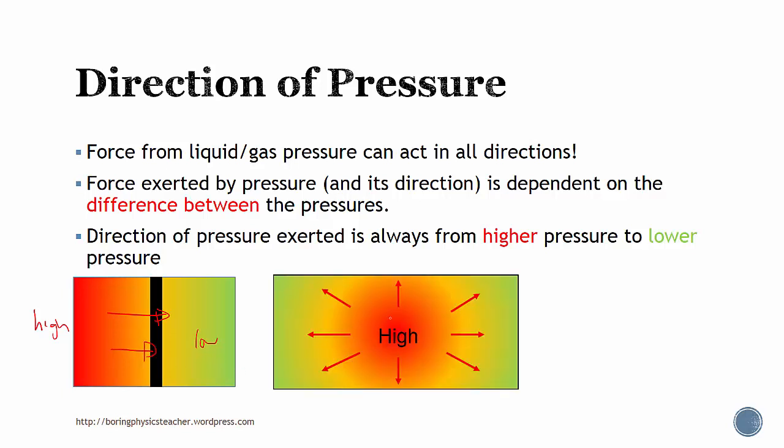If the center is a high pressure region and the surrounding is low pressure, the pressure will exit upwards in all directions, not just down. Or the opposite, if the surrounding is high pressure and the center is low pressure, the pressure will be acting inwards. Direction of pressure depends on the difference between two pressure regions, and it will always be from high to low.